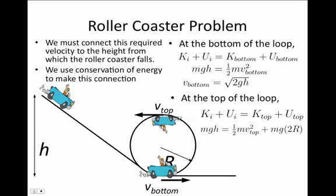At the top of the loop, we hopefully have some kinetic energy, ½mv_top squared. But now we also have some potential energy, because instead of being down here at the very bottom, we climb back up a distance. And how far is that distance? It's 2R. So our potential energy here in this location is mg times 2R. Or v_top squared equals 2g(h - 2R).